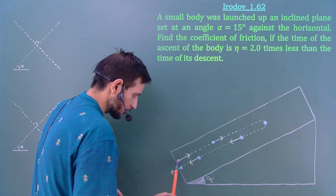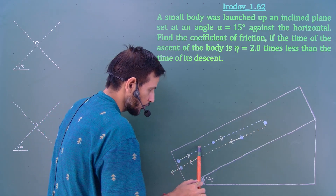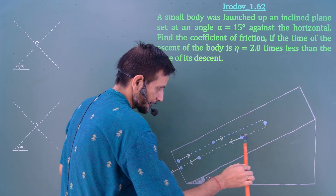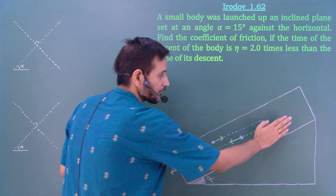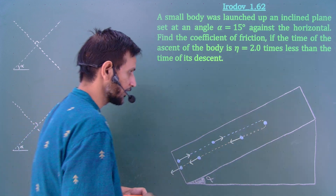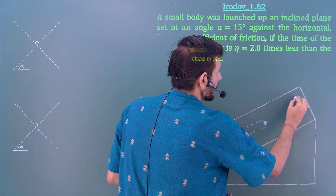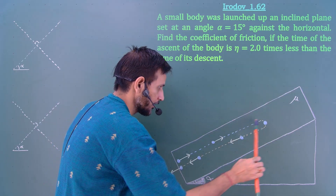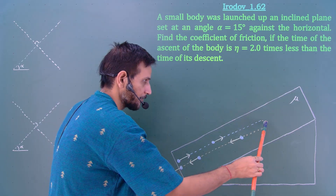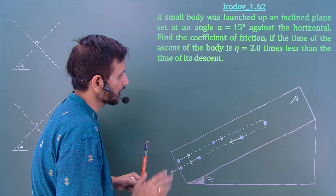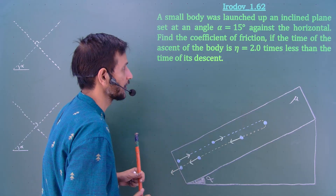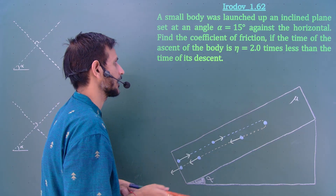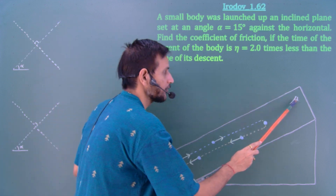When we throw this particle, it goes up the plane, stops at a moment, and then comes back. The surface of this plane has friction, so there is a coefficient of friction — let me call it mu. The time of ascent and the time of descent are different. It is given that the time of ascent is eta times less than the time of descent, so we have to calculate the value of mu.